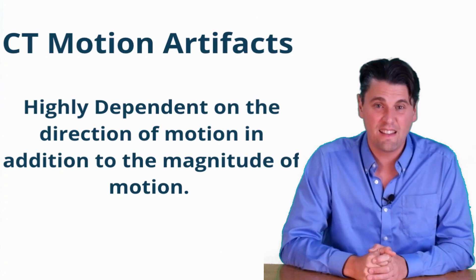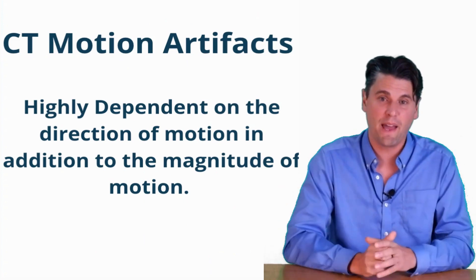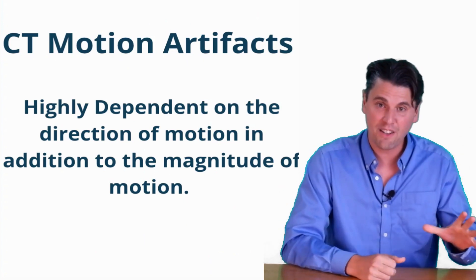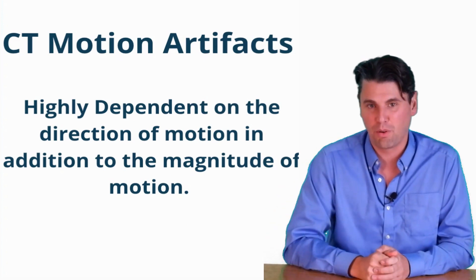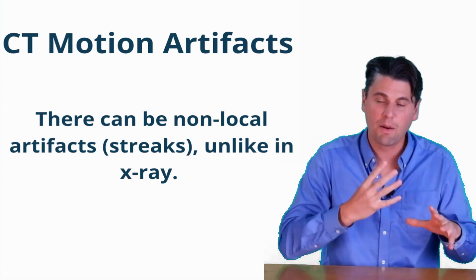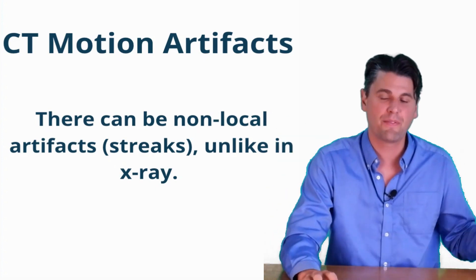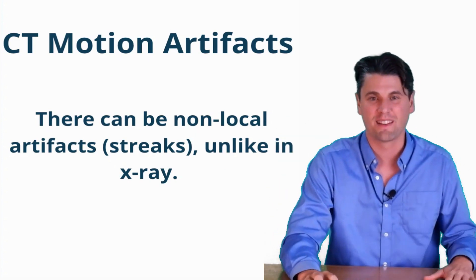So what really matters is actually motion that is perpendicular to the direction that the x-rays are acquired in. Those are the types of motion that will actually generate really significant artifacts, whereas this type of motion, if you back project this small level of difference, you won't really notice it in the image volume. Just a takeaway is that the CT motion artifacts are highly dependent on the direction of the motion in addition to the magnitude of the motion. These artifacts are also non-local, so you can end up with streaks in the images, which is different than in the case of just x-ray imaging.